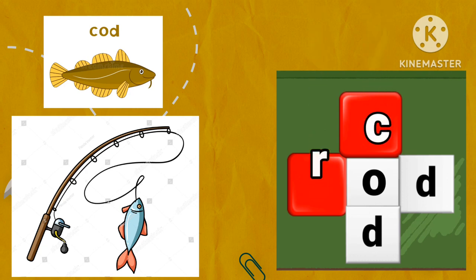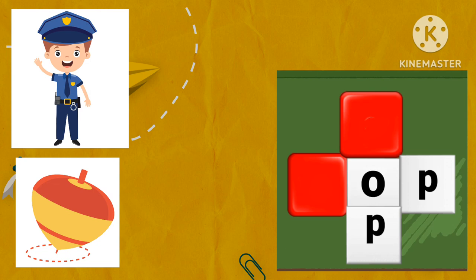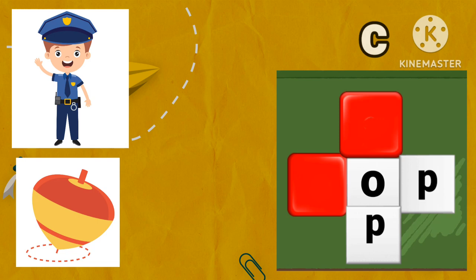Next, look at the pictures and guess the rhyming words. Cop, top. Which letters are missing? Letter C and letter T. Drop the missing letters in the red boxes. Letter C for cop and letter T for top.